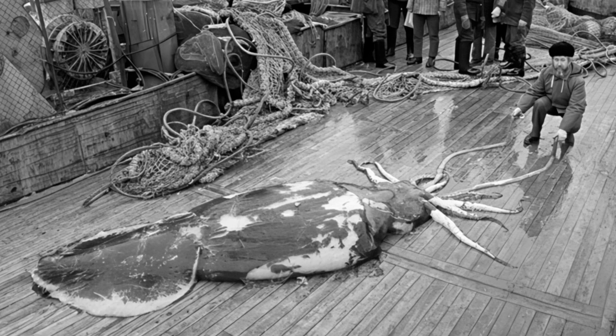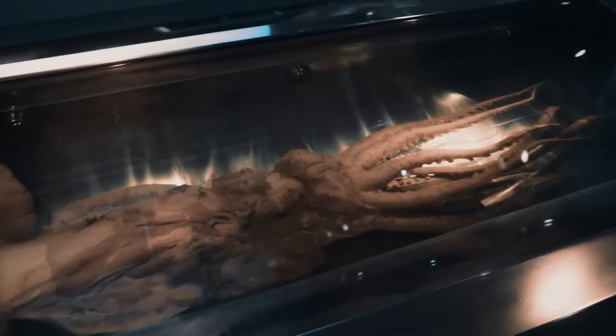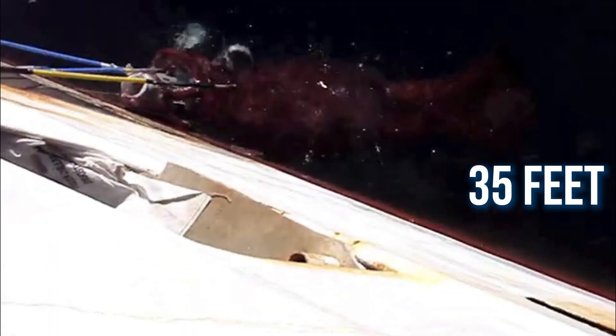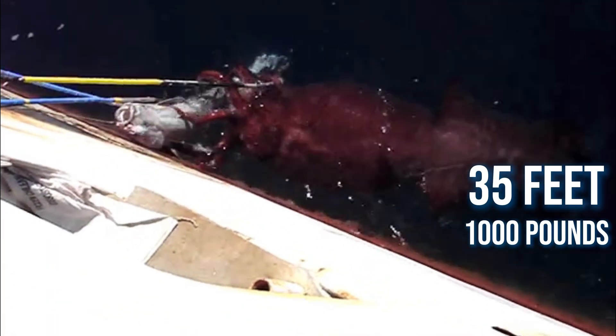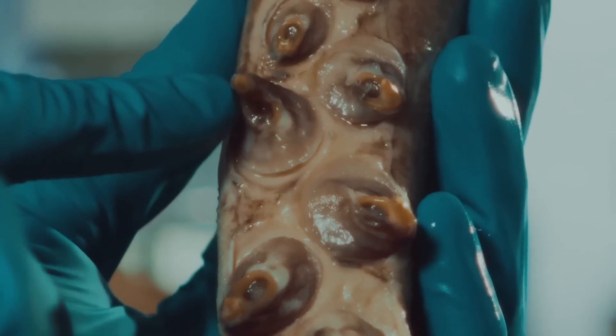At the very bottom of this world drifts the heavyweight of the squid family, the colossal squid, Mesonychoteuthis hamiltoni. Unlike its cousin Architeuthis dux, it's shorter but far thicker and heavier, around 35 feet long, weighing over 1,000 pounds. Its suckers carry rotating hooks like miniature drills.